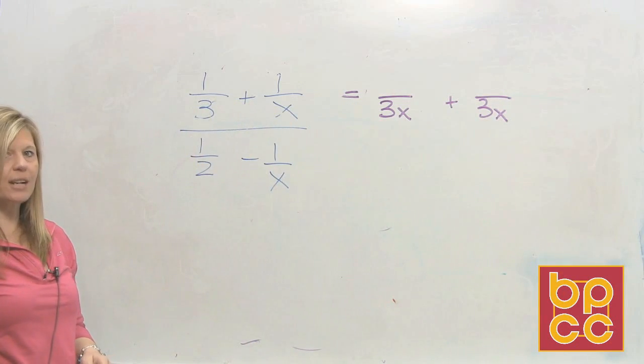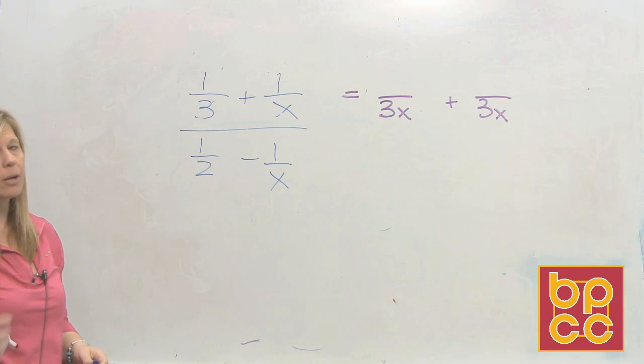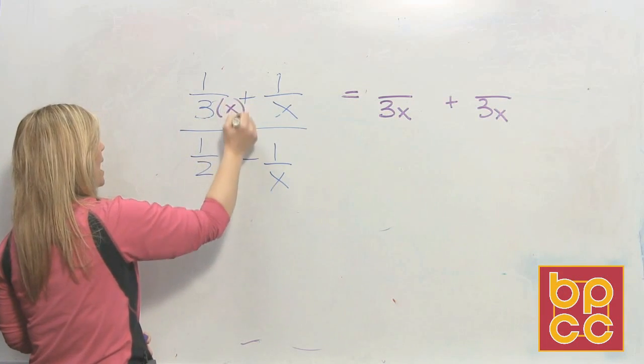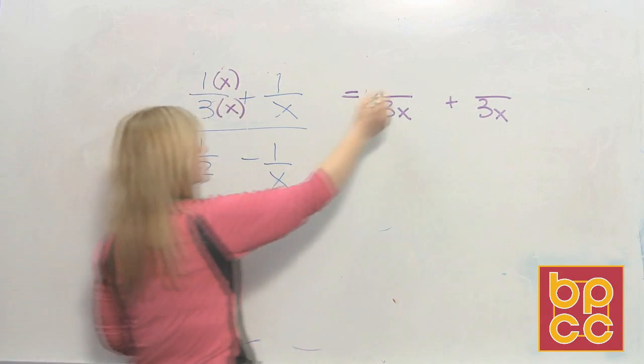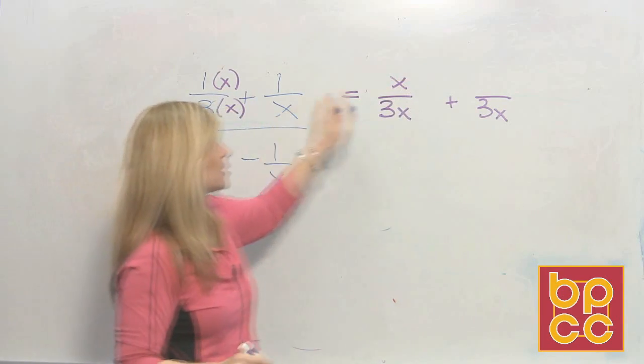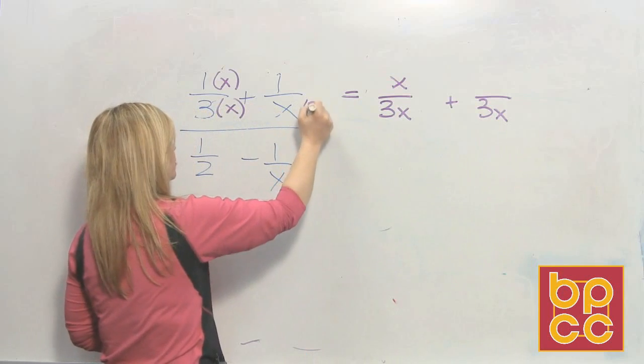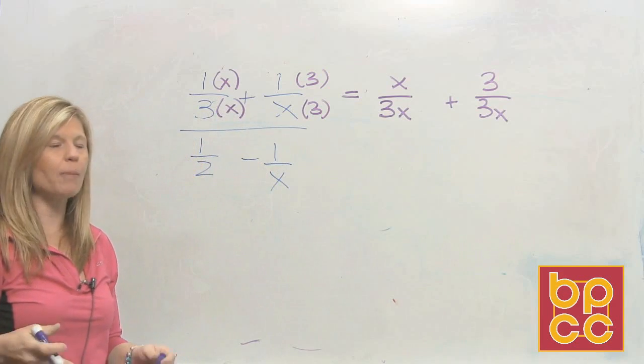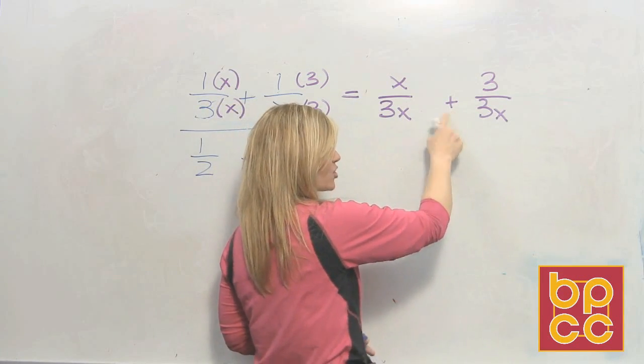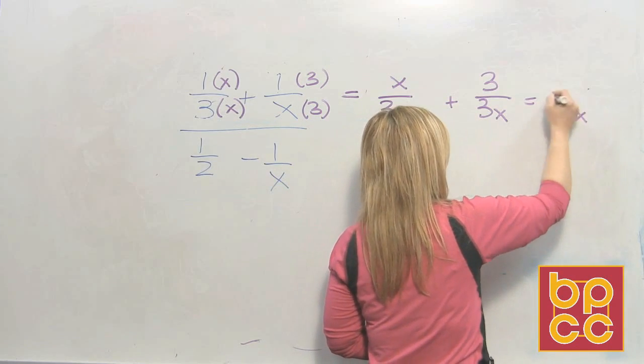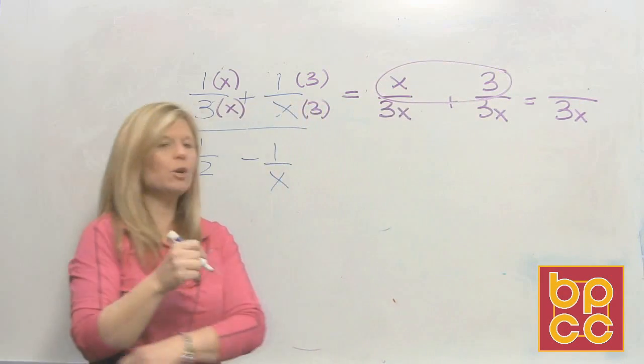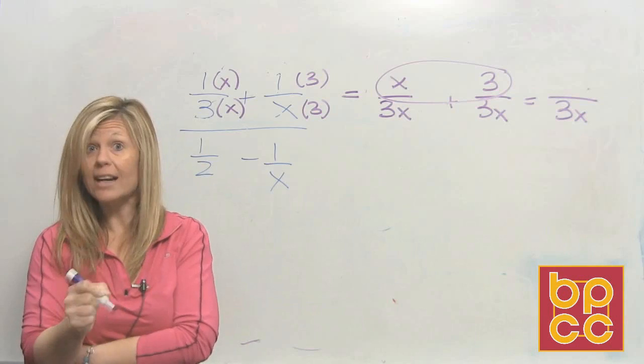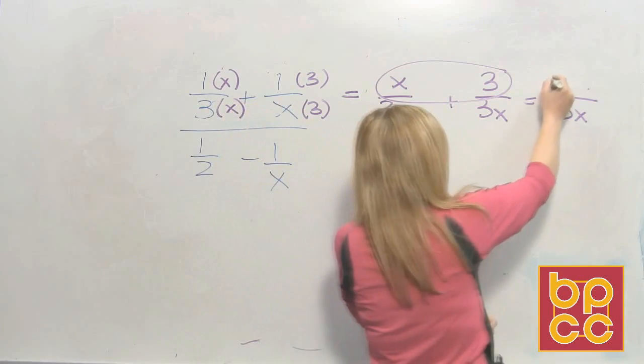If you change the denominator, you've got to change the what? The numerator. So now we're going to make our equivalent fractions. How does a 3 become a 3x? You multiplied by x. So 1 times x is x. How does an x become a 3x? You multiplied by 3. So 1 times 3 is 3. Now, the whole purpose of going through and making a common denominator is so that you can add these fractions together. So you write the bottom. You collect the top. Can you add the letter x to the number 3? No, they're not alike. From chapter 12, they're not like terms. So we just write them in order. x plus 3.